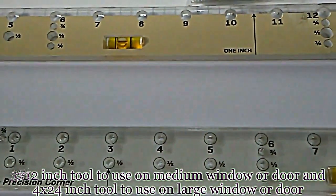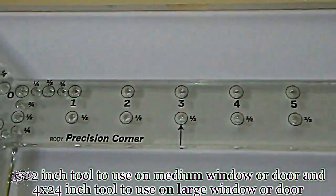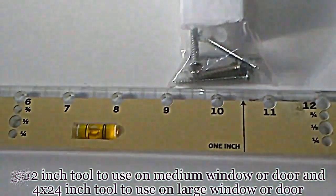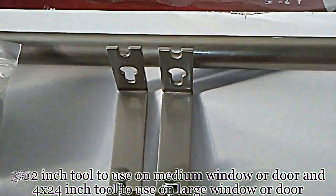So the next clip what you're about to see is a demonstration on how I use this 3x12 inch tool to mount two brackets above my closet door to show you how easy and simple to use.